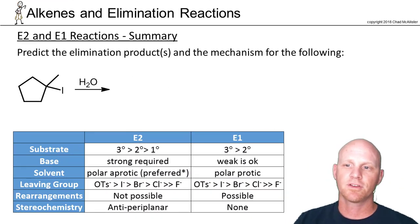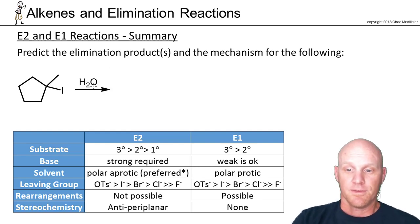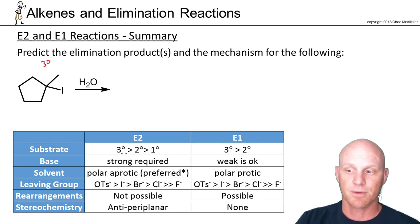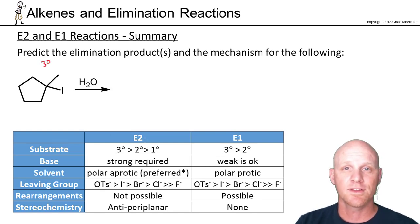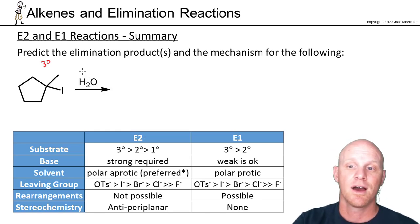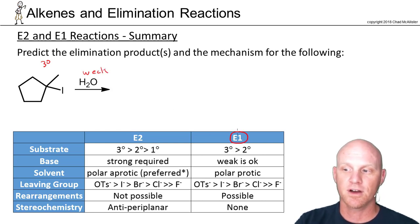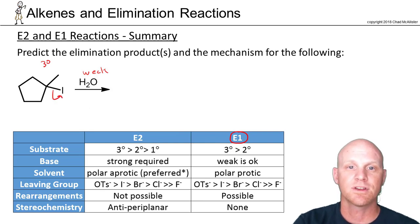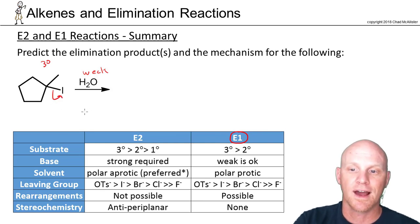Now let's predict some elimination products. In this first example, the substrate is a tertiary halide — not really distinguishing for E1 vs. E2. The base here is water, which is weak, and that points us toward an E1 reaction. The first step is the leaving group leaves and you form a carbocation. I highly recommend drawing that carbocation out for E1 reactions to check whether it will rearrange.